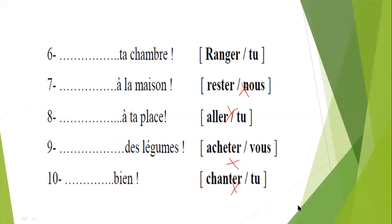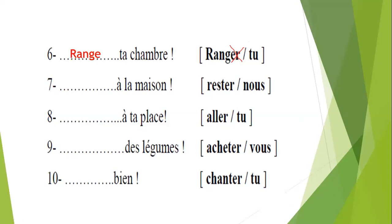Let's go to the next page, number six. I'll give another chance to Fatema. Fatema Oseam — ranger with tu. What is the first step? Cross the ER. Très bien. Then what I will put? E. Excellent, bravo. Range ta chambre — arrange your room. I want you all today to go and arrange your rooms and don't forget to help your mom every day.